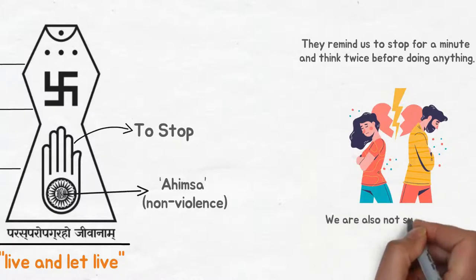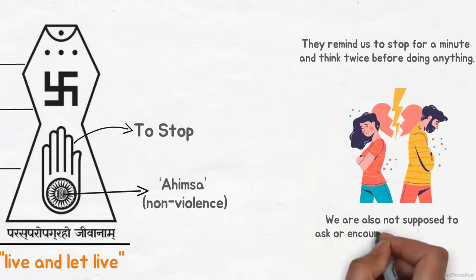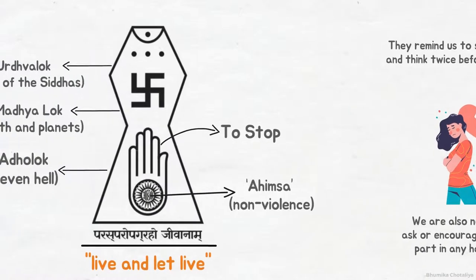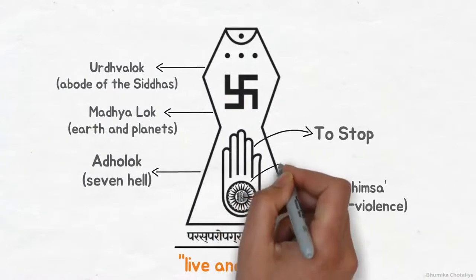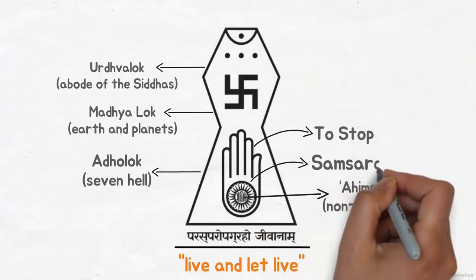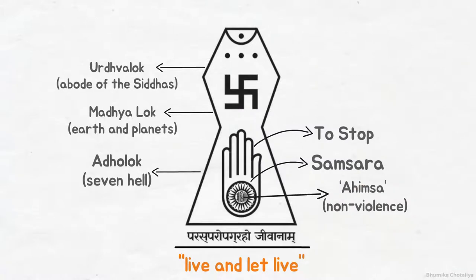We are also not supposed to ask or encourage others to take part in any harmful activities. The wheel in the hand shows samsara — that if we are not careful and ignore this warning and carry on violent activities, then just as the wheel goes round and round, we will go round and round through the cycle of birth and death.